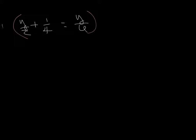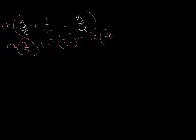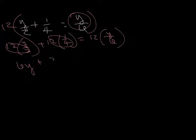What we're going to do is put a parenthesis around the whole thing and multiply each of these pieces times 12. So let's do that. 12 times y over 2 plus 12 times 1 over 4 equals 12 times y over 6. Don't forget to do the other side of the equal sign. 12 over 2 is 6. 12 over 4 is 3. 12 over 6 is 2. Fractions are gone.